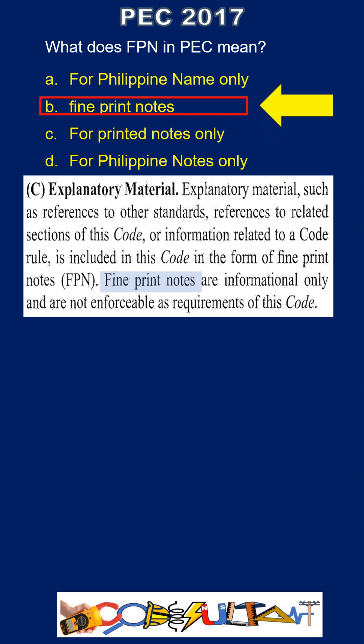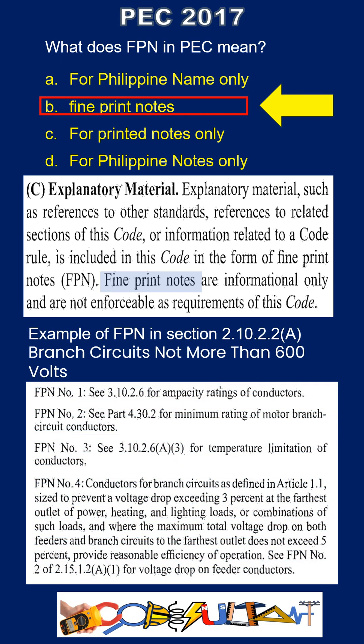Let's have an example of FPN. In section 2.10.2.2a, Branch Circuits, FPN number 4 states that the maximum combined voltage drop for both the feeder and branch circuit shouldn't exceed 5%, and the maximum on the feeder or branch circuit shouldn't exceed 3%. The code doesn't require us to do voltage drop calculations because they aren't involved in issues of safety, but that doesn't mean they aren't important.